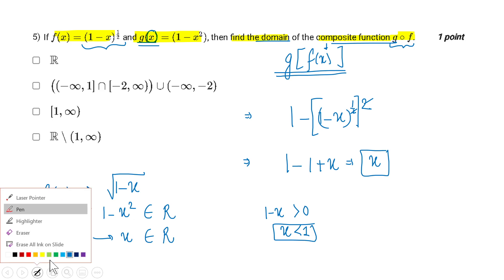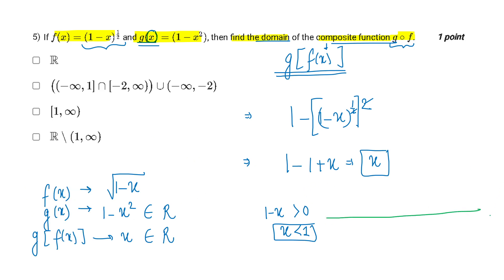Therefore, what timeline I am getting for this is ki ek toh pura ka pura real number hai. Aur ek jo x ki value hai, woh 1 se chhoti honi chahiye hai. So basically, the answer or the domain of the composite function g of f will be minus infinity to 1.